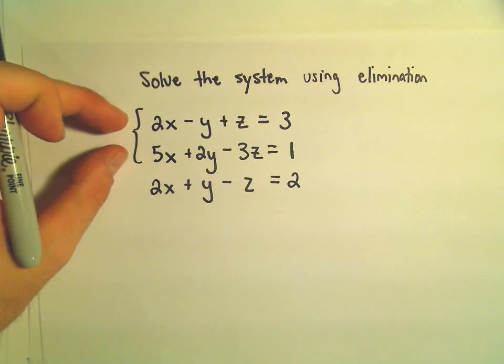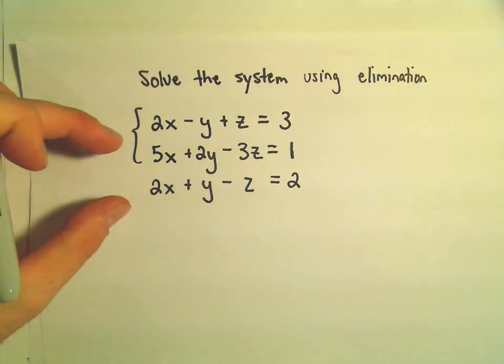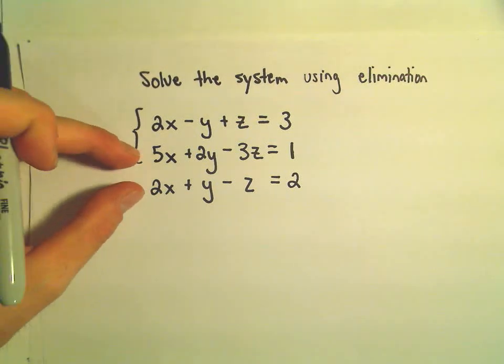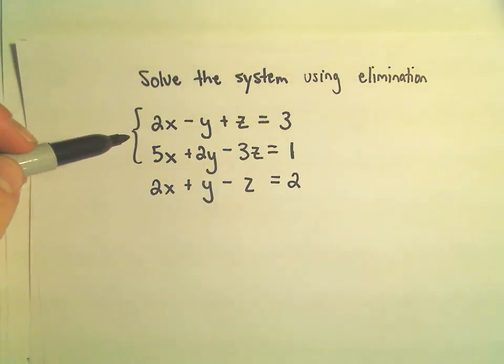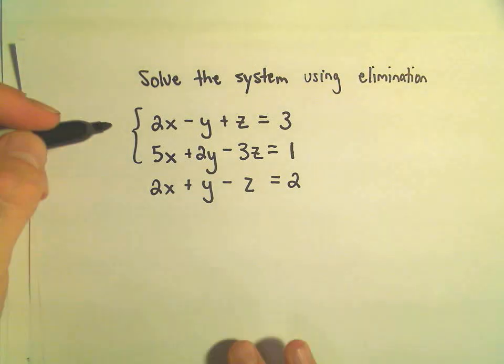So I think I'm going to use the first and second one to begin with, and then you could either use the first and the third one, or the second and the third one. Whatever variable you eliminate the first time, you have to eliminate that again. Okay, so here's the idea.